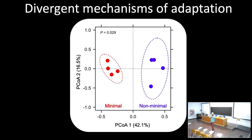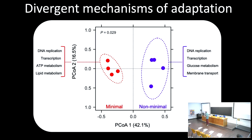Looking at the pattern of shared adaptive changes, the genes are completely different between the two strains—and we're only comparing essential genes here. So there are divergent mechanisms of adaptation arising. Some fall into similar categories like DNA replication and transcription in both groups, but in the minimal cell we see mutations in ATP and lipid metabolism—just divergent ways in which these organisms are undergoing adaptation based on sequence data.